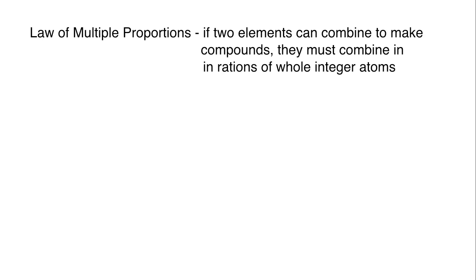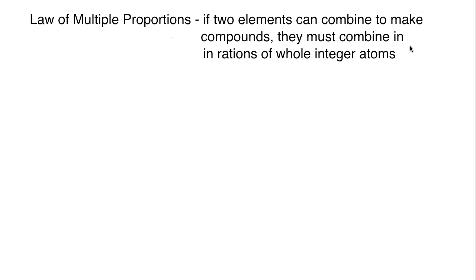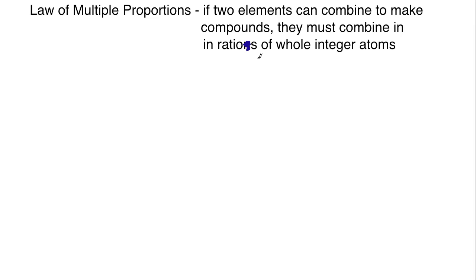What is the law of multiple proportions? It states if two elements can combine to make compounds, they must combine in ratios of whole integer atoms. When we take a look at this, it could be more than two elements, but when you start combining them, they have to combine in whole integer numbers. For H2O, it's two hydrogens and one oxygen. For hydrogen peroxide, it's two hydrogens and two oxygens.